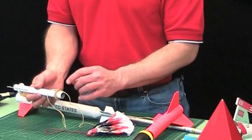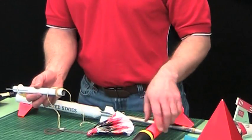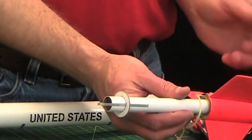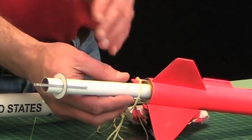Your engine pod needs to have a centering ring on the front because that is what protects everything in here from the ejection charge.